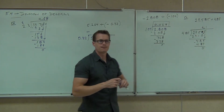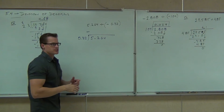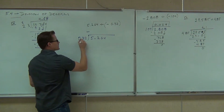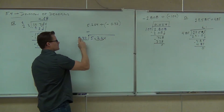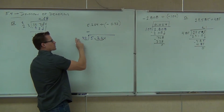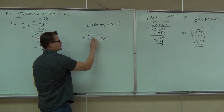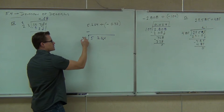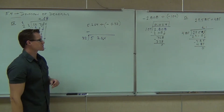Next thing: move the decimal. How many places are we going to move that decimal? Two — two here and two there. I don't really need that 0 anymore since we're talking about a whole number now. So you should have 32 going into 526.4, and I'll make sure my decimal is also on the top of my division problem.